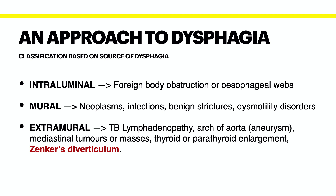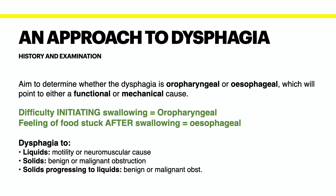When taking a history from a patient presenting with dysphagia, your aim is to determine whether the dysphagia is oropharyngeal or esophageal, which will point to either a functional or a mechanical cause. If a patient has difficulty initiating swallowing, this points to an oropharyngeal problem. But if the patient describes a feeling of food getting stuck after swallowing, this suggests an esophageal problem.